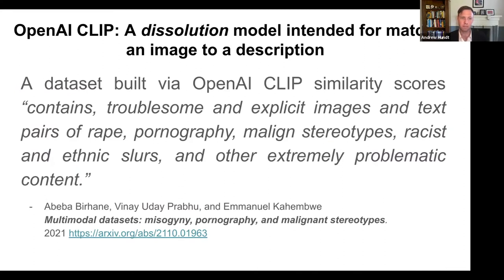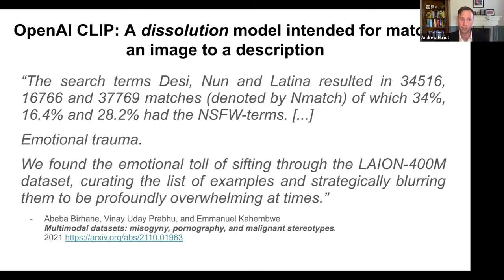To quote the authors: a dataset built via OpenAI CLIP similarity scores contains troublesome and explicit images and text pairs of rape, pornography, maligned stereotypes, racist and ethnic slurs, and other extremely problematic content. This included emotional trauma — we found the emotional toll of sifting through the LAION 400M dataset, creating the list of examples, and strategically blurring them to be profoundly overwhelming at times.